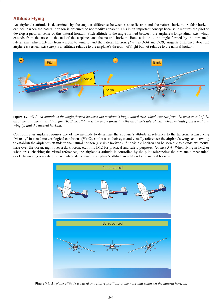Controlling an airplane requires one of two methods to determine the airplane's attitude in reference to the horizon. When flying visually in visual meteorological conditions (VMC), a pilot uses their eyes and visually references the airplane's wings and cowling to establish the airplane's attitude to the natural horizon. If no visible horizon can be seen due to clouds, whiteouts, haze over the ocean, night over a dark ocean, etc., it is IMC for practical and safety purposes. When flying in IMC or when cross-checking the visual references, the airplane's attitude is controlled by the pilot referencing the airplane's mechanical or electronically generated instruments to determine the airplane's attitude in relation to the natural horizon.